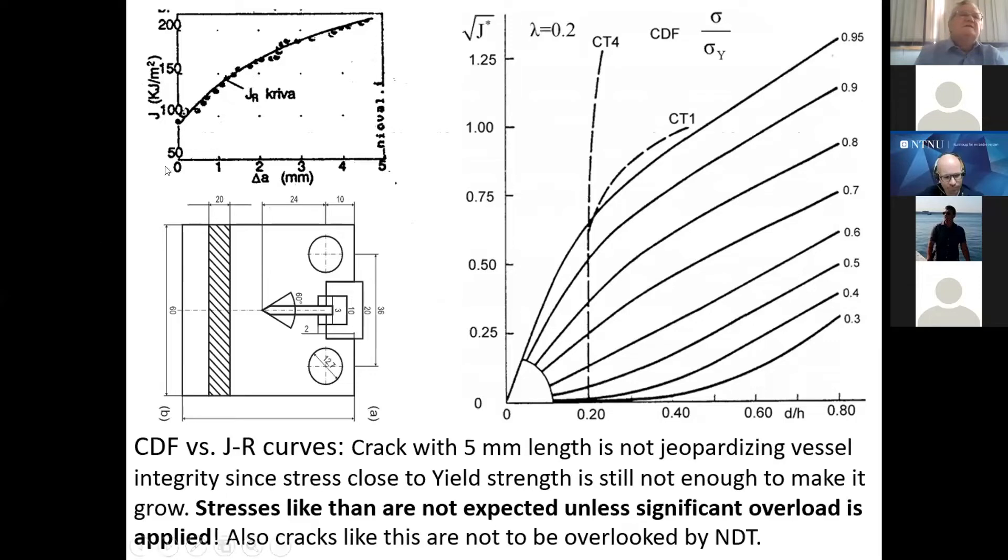Nevertheless, here is a JR curve that we obtained by using CT specimens. And once again, here is this plot of crack driving force versus JR curves, indicating that even 95% of yield strength will not make crack grow. And the initial crack length is about 20% of thickness. So this is once again, quite a large crack which cannot be overlooked by NDT. And also stresses like that are not definitely expected unless significant overload is applied.